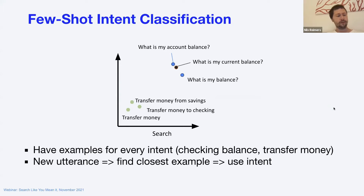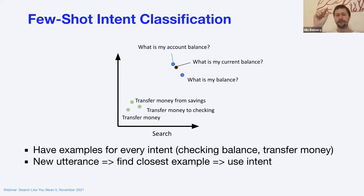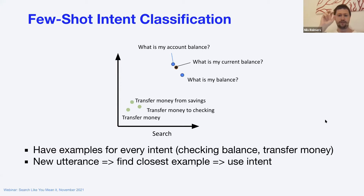These vector spaces are also quite interesting for classification, not just search. When working on a chatbot in conversational AI, you often have intent classification tasks. For example, for a consumer bank chatbot, if someone asks 'what is my current balance,' you embed this in a vector space, check against similar sentences you have in training data — like 'what is my account balance' — and infer the intent. The closest points tell you it's the same intent: show the user their balance.